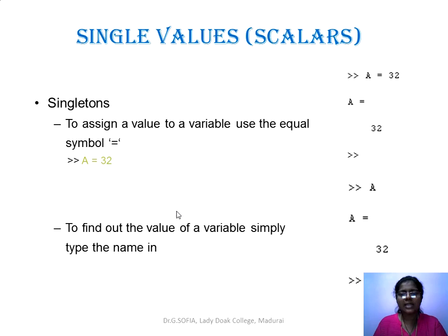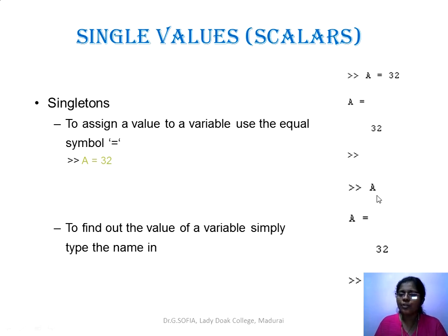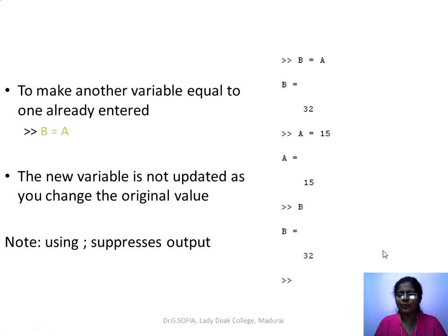Scalar values are single values, also called singletons. To assign a value to a variable, use the equal-to operator. For example, to assign 32 to a, type 'a = 32' and press enter — it will display 'a = 32'. To make another variable equal to one already entered, for example assigning the value of a to b, type 'b = a', and the value 32 from a will be assigned to b.